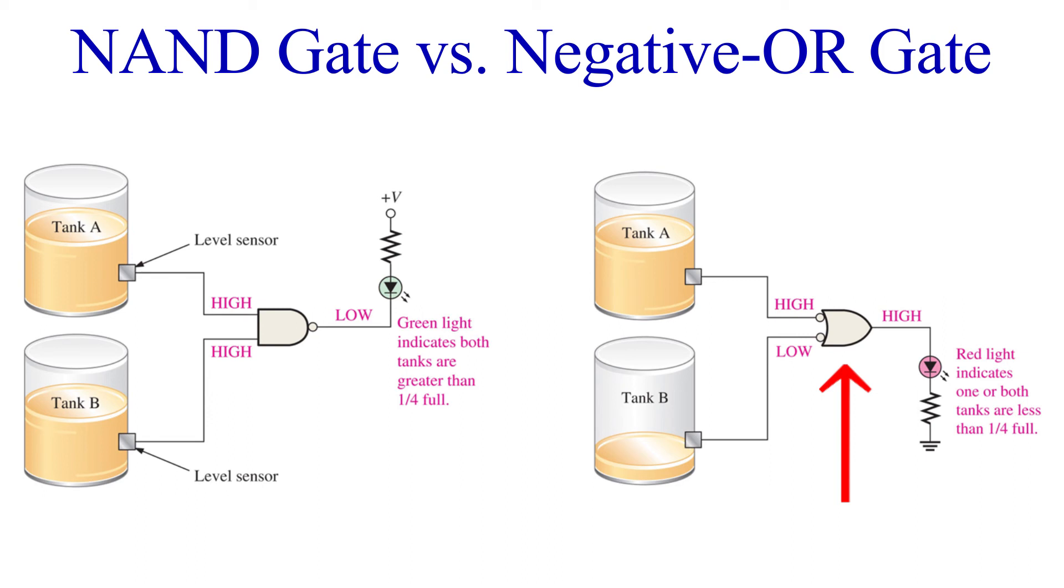When one or both of the tanks fall below 25%, the sensor goes low, which is inverted by the negative OR into a high signal to be ORed. This will cause a high output on the gate and cause the red LED to turn on. So hopefully you can see the difference in the usage of the two gates despite them having identical truth tables.